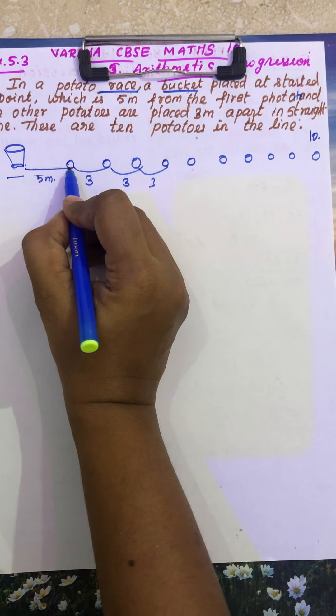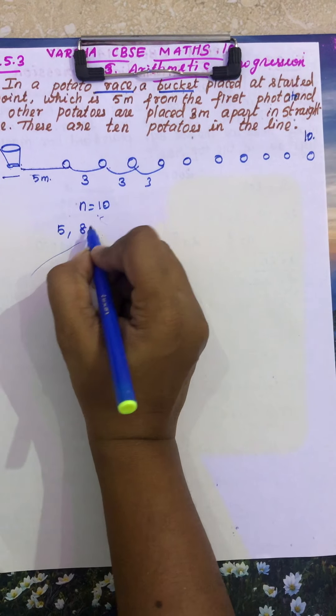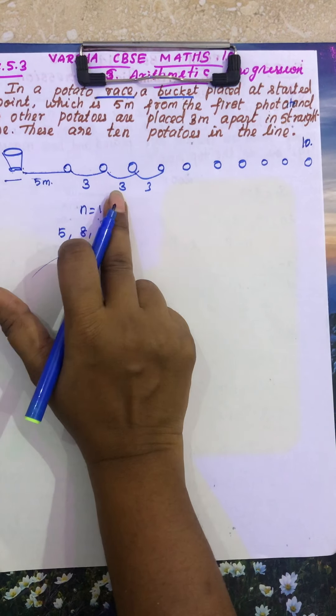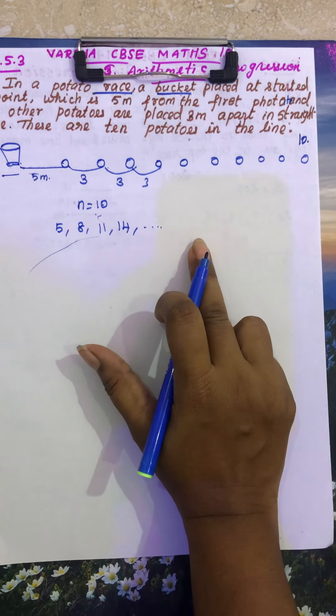See, so first potato's distance is 5, so second potato's distance is 8, third potato is 11, fourth one is 14, so etc.